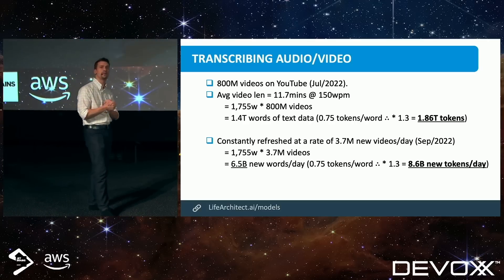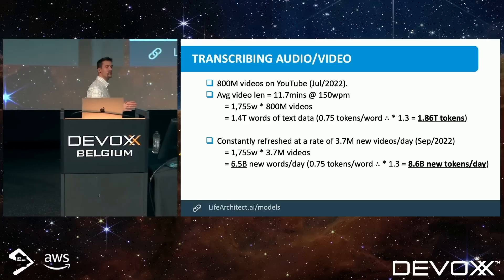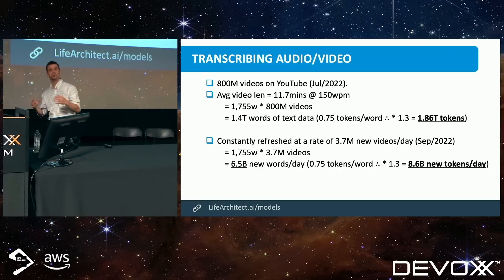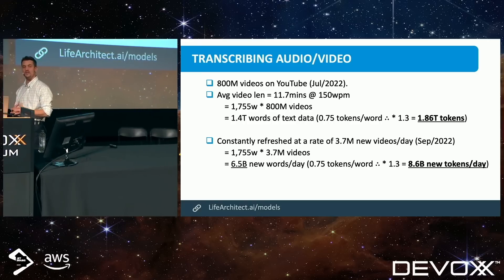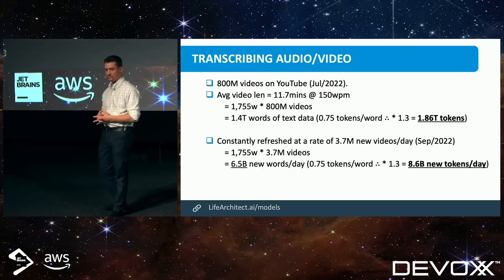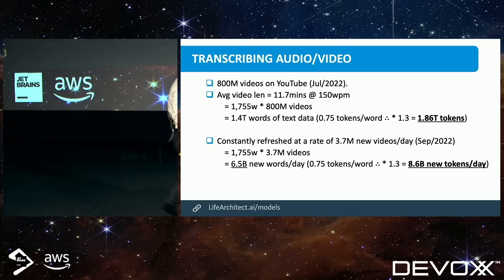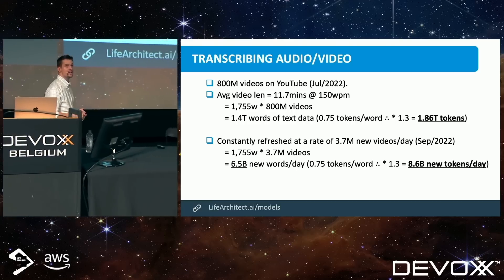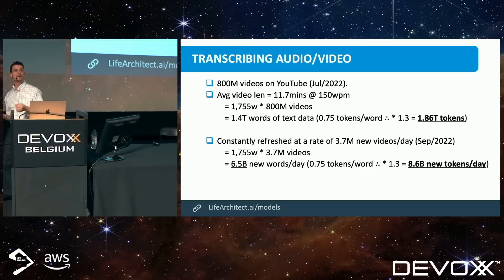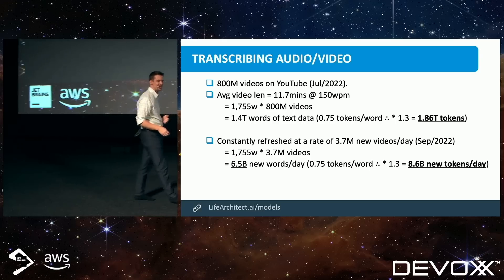GPT-3 was trained on 300 billion tokens. It probably should have been trained on 3 trillion tokens because they were not compute-optimal in the way they did things, and DeepMind Chinchilla essentially retaught how we should be doing that with the Chinchilla scaling. But if we're aiming for 3 trillion tokens and we can use the words spoken on YouTube, that might be a cool way to do things.